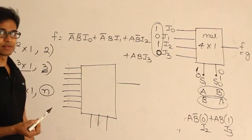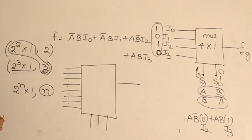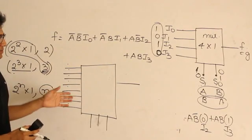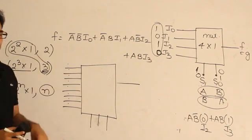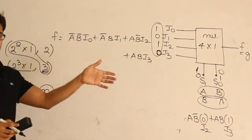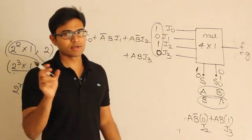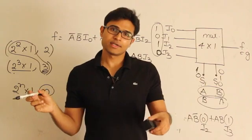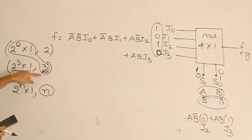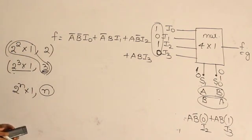But the question arises: can I implement a three-variable function using a 4×1 multiplexer? The number of variables is 3 but the multiplexer only has 4 inputs (2 select lines). It turns out this is possible, but you may need to use additional gates at the inputs. Let me take an example to explain.